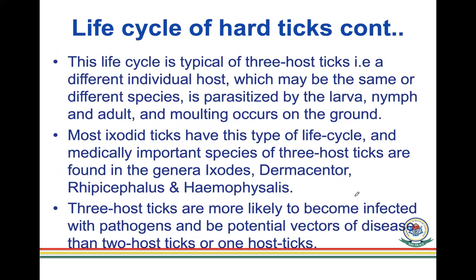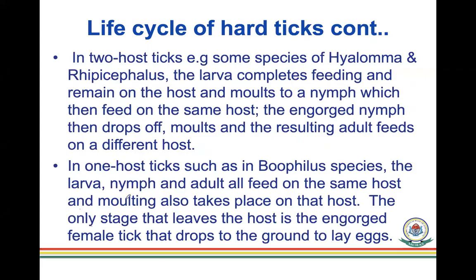This life cycle is typical of three-host ticks, where a different individual host — which may be the same or different species — is parasitized by the larva, nymph, and adult, with molting occurring on the ground. Most hard ticks like Ixodes follow this type of life cycle. Three-host ticks are most likely to become infected with pathogens and are the best vectors because they can transfer diseases between different animal hosts.